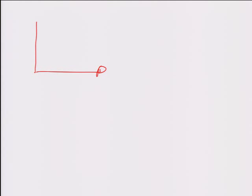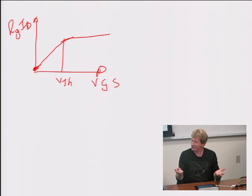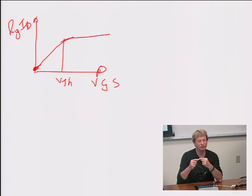What are people doing to get around leakage? The problem is that on a log(Id) vs. Vgs plot, leakage current is the current that flows when Vgs equals zero. One obvious solution is to keep Vt large — the larger Vt, the less leakage. It's a logarithmic dependency: with a slope of 80 mV/decade, every 80 mV increase in Vt gives you a 10× reduction in leakage current.